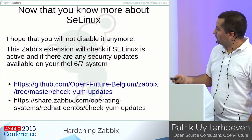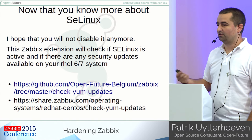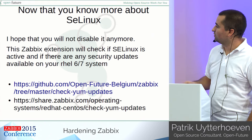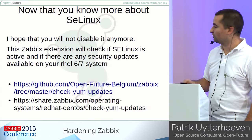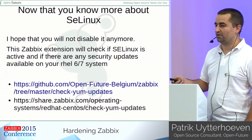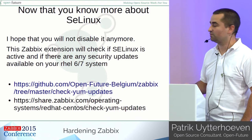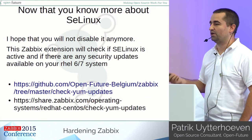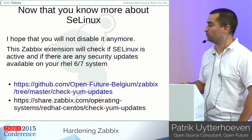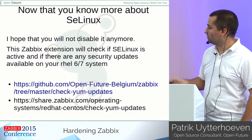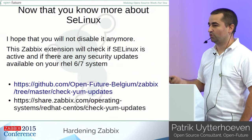Now that you know a little bit more about SELinux, I hope you will not disable it anymore but try to use it properly. I also created a small script you can use in Zabbix — it's an extension you just copy into your crontab. It will run and send all the information to Zabbix via the Zabbix sender, so you have an idea if SELinux is activated on your systems. It will also check for security updates and tell you how many moderate or critical updates you have to patch. It's available on my GitHub account and also on the Zabbix share.